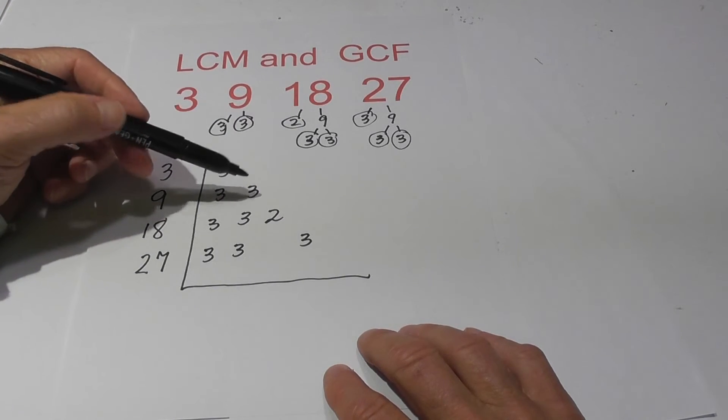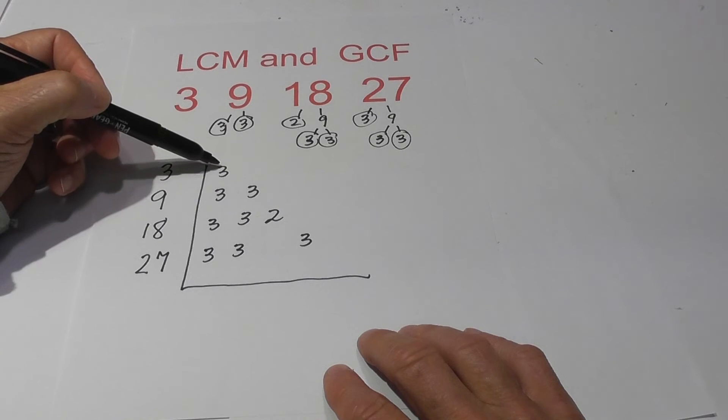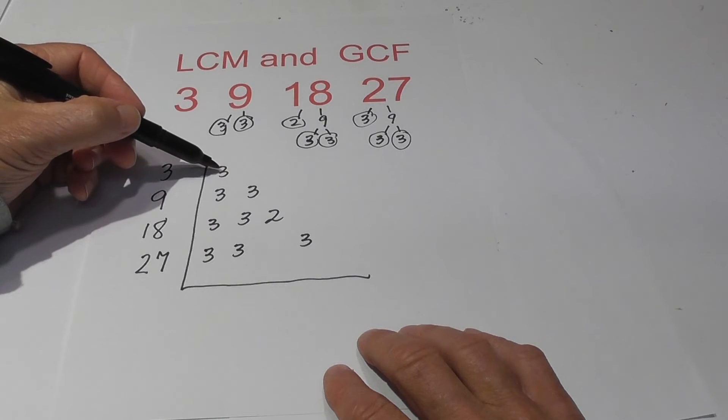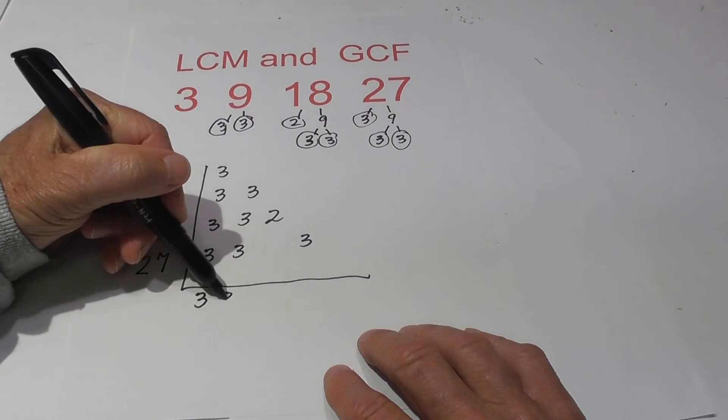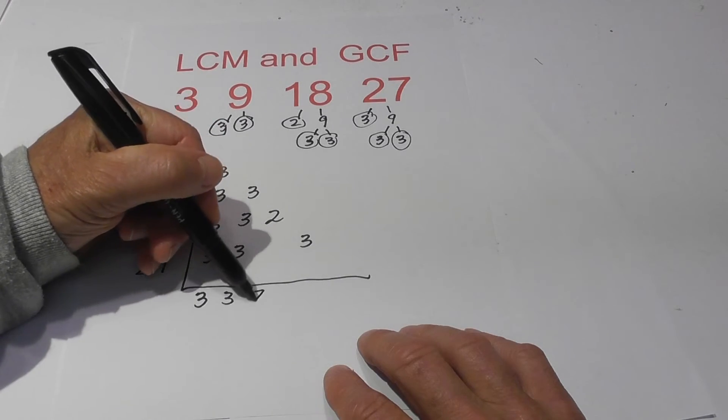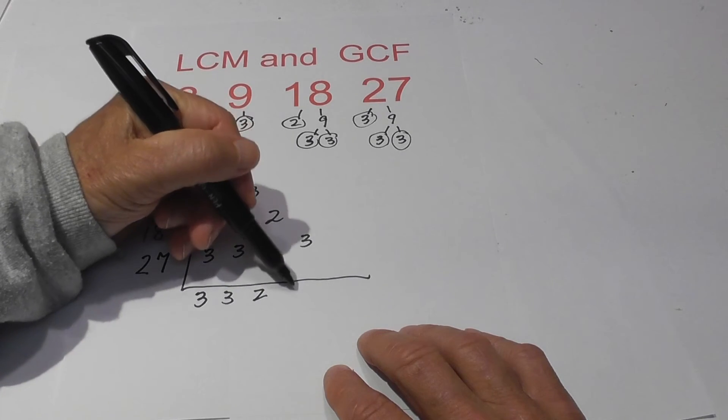So now, you know the rule. If you have more than one, you just bring one of the numbers down. So I've got three of the prime number three in all four numbers, so I'll pull it down. One three, and one three, and one two, obviously because we only have one, and then one three.